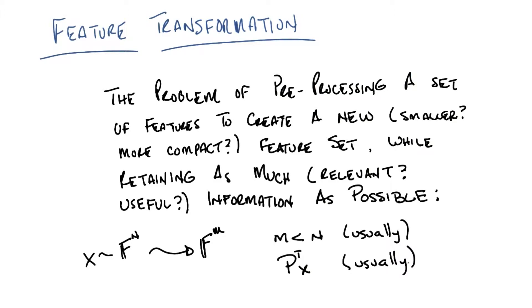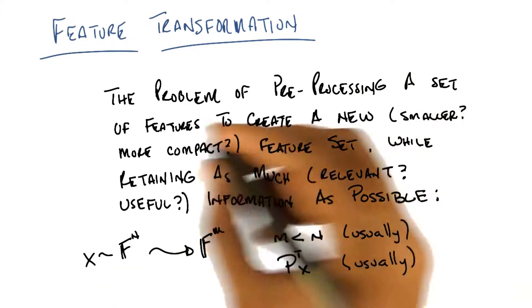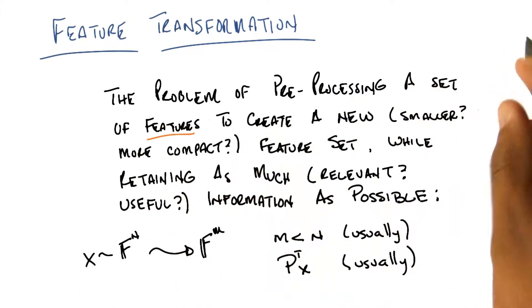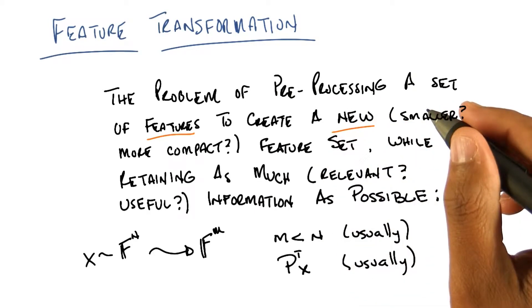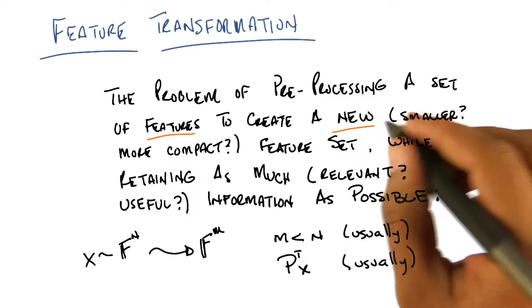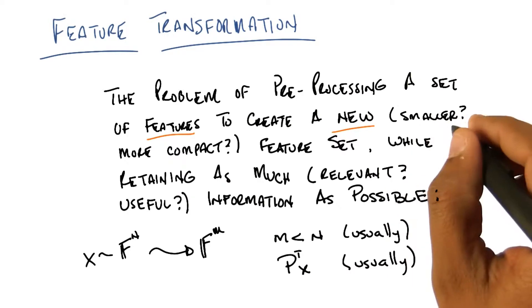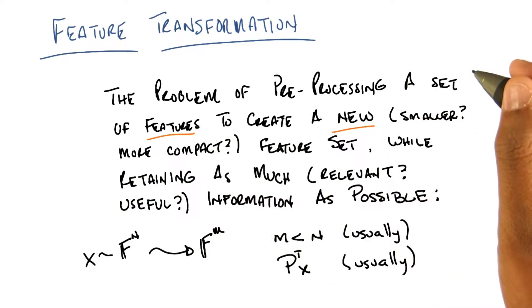Okay, so feature transformation, as opposed to feature selection which we talked about last time, is the problem of doing some kind of pre-processing on a set of features in order to create a new set of features. Now typically, we expect that new set of features to be smaller or in some way more compact.